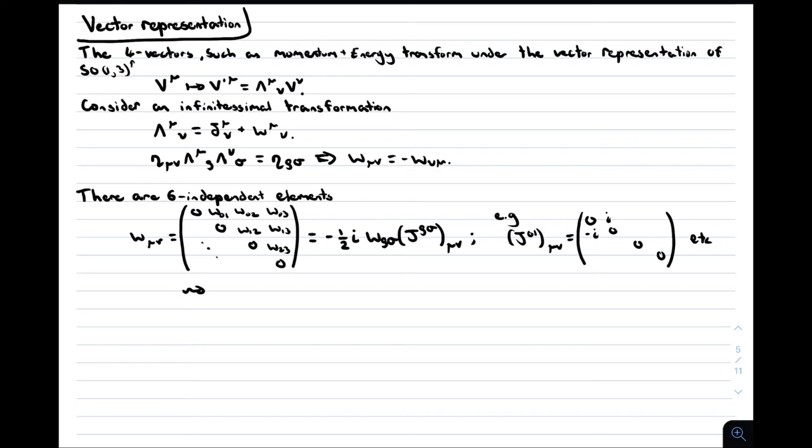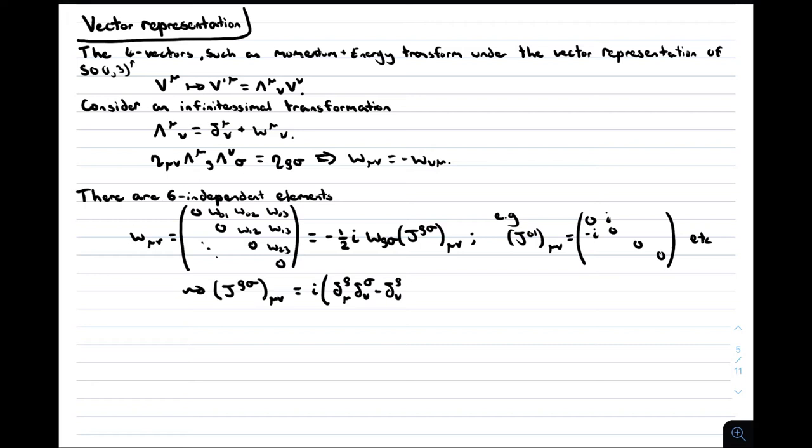We then usually take out a factor of minus i out of the generators as we have done in previous videos. By separating out each independent parameter we can find an expression for the generators with both indices lowered. We then raise the first index to find an expression for the generators that seems quite abstract. In the next few slides we will interpret what these transformations are.